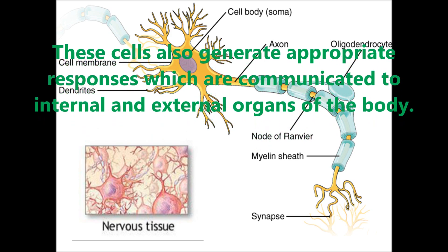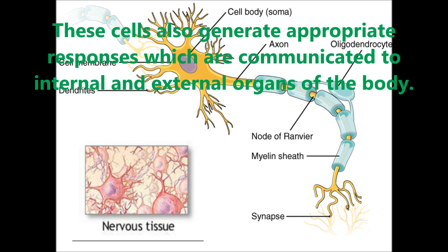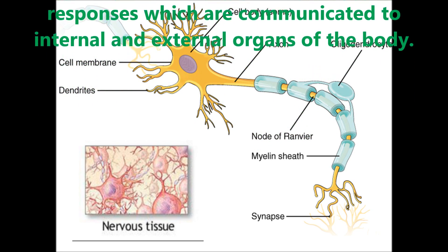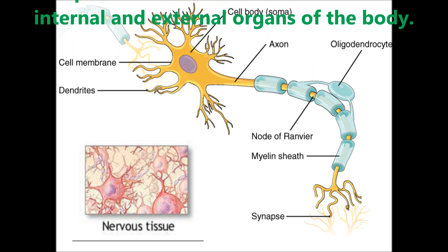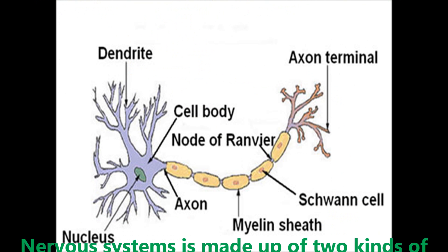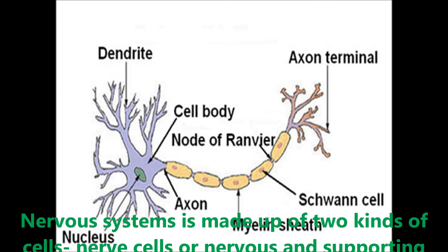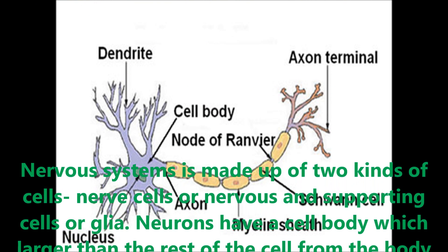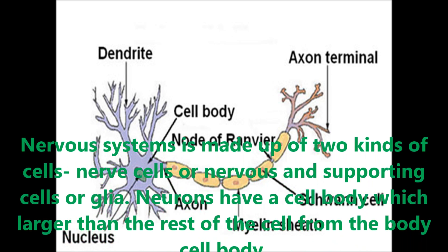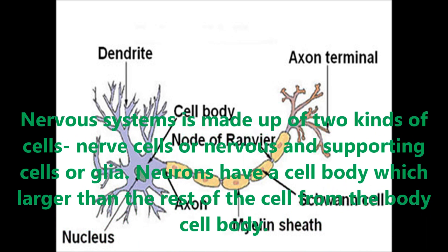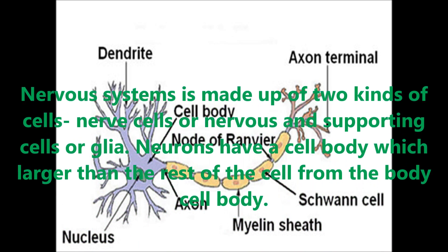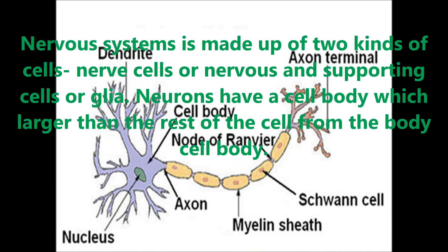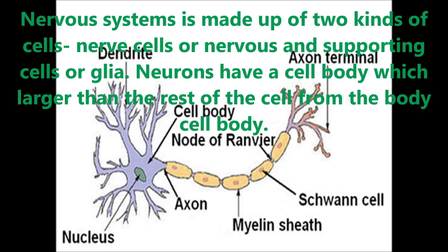In the previous class you have learned how nerves transmit information from sense organs to the brain. The nervous system is made up of two kinds of cells: nerve cells, which are neurons, and their supporting cells, which are called glial cells.